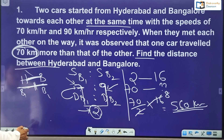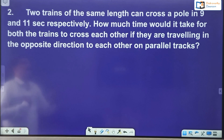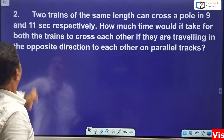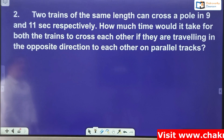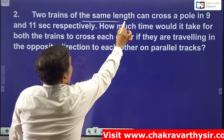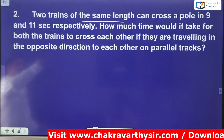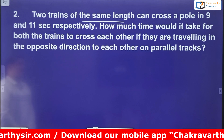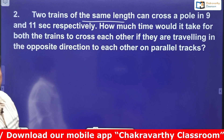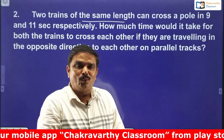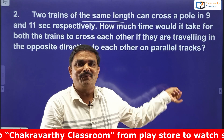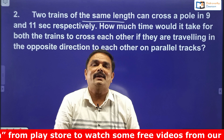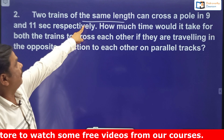Now go to the second question. Two trains of the same length — very, very important point, same length — can cross a pole in 9 and 11 seconds respectively. How much time would it take for both trains to cross each other if they are travelling in opposite directions on parallel tracks? This is a fantastic question. If you do not know the concept of trains, it is very difficult to understand. The key for us here is that they are of the same length.